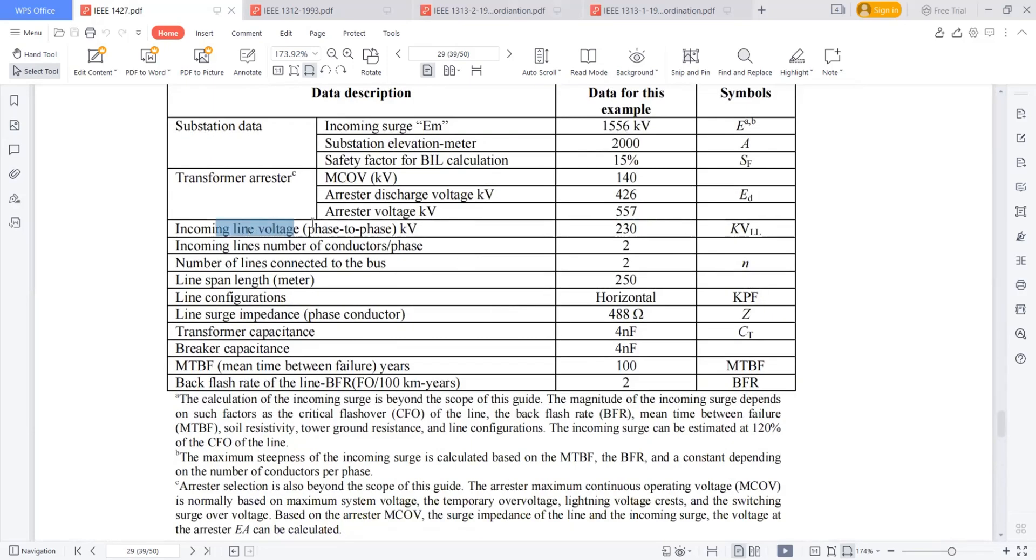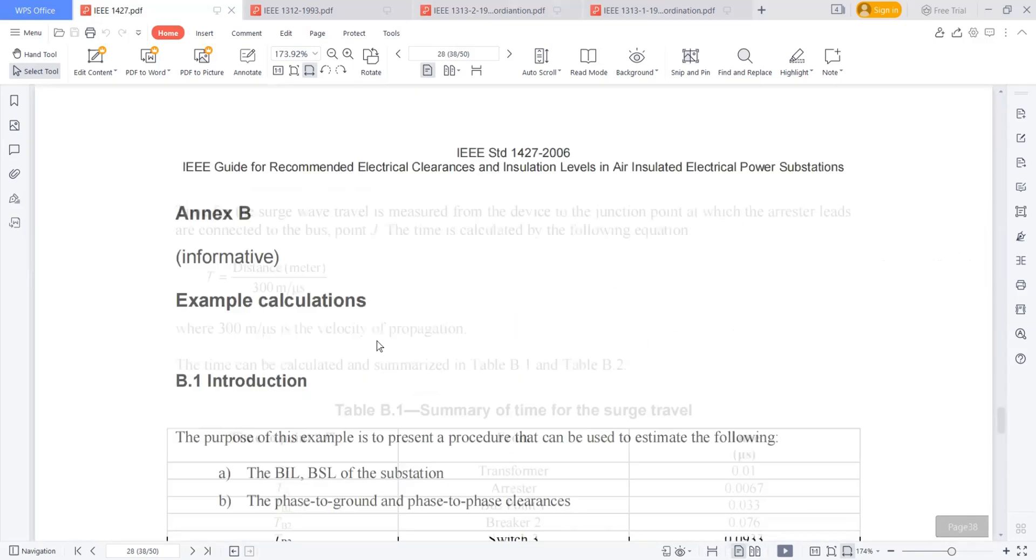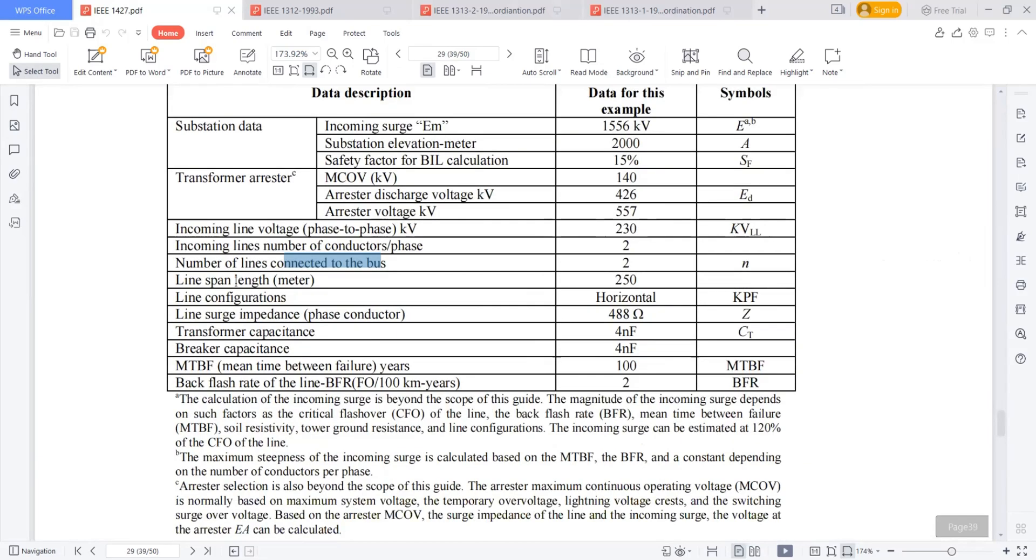Next, I am checking what is the incoming line voltage, 230 kilovolts. How many conductors per phase? Suppose it is a twin moose, so two conductors per phase. Number of lines connected to the bus, two number of lines. You can see in the SLD two lines. And the line length is 250 kilometers. What is the configuration of this line? What are the different types of configurations? Triangle configuration, vertical configuration, horizontal configuration. Depends upon your selecting horizontal configuration.